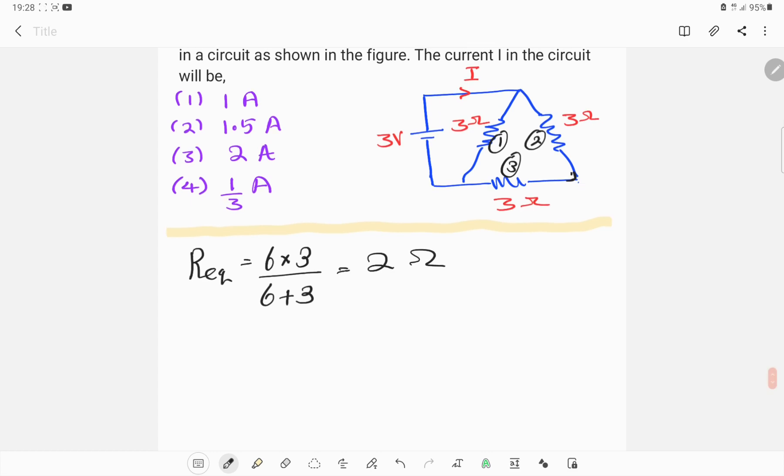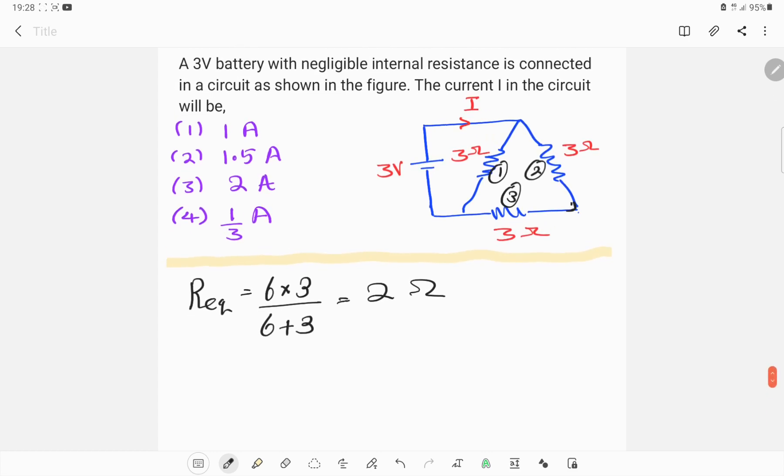So now you can see the equivalent resistance of the circuit, so we can use V equals IR equation now.